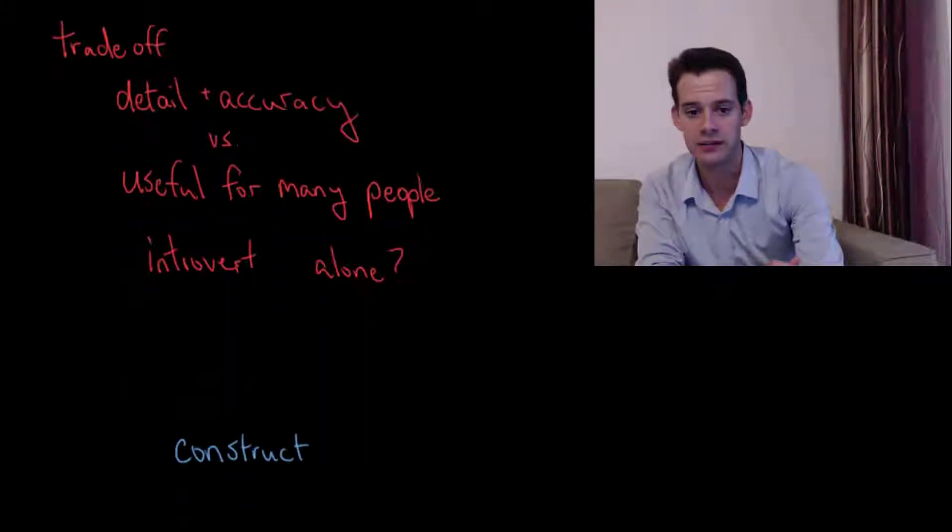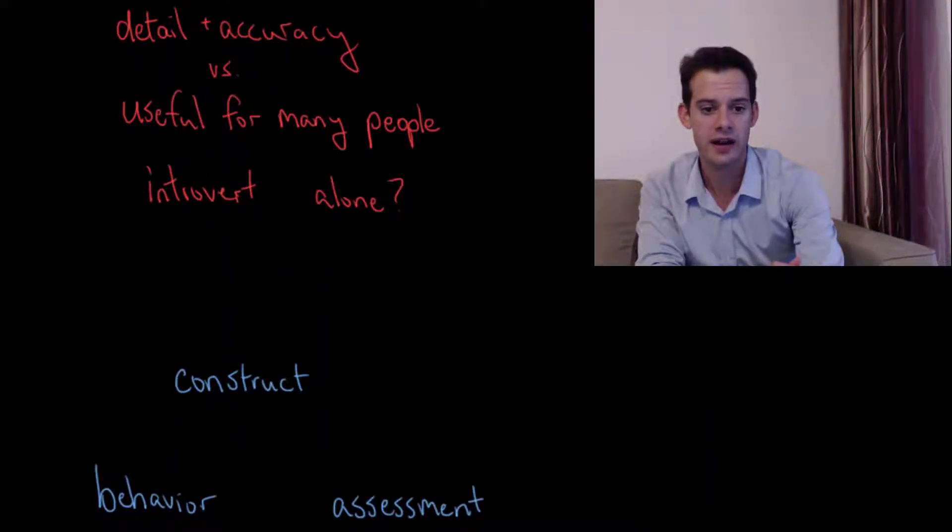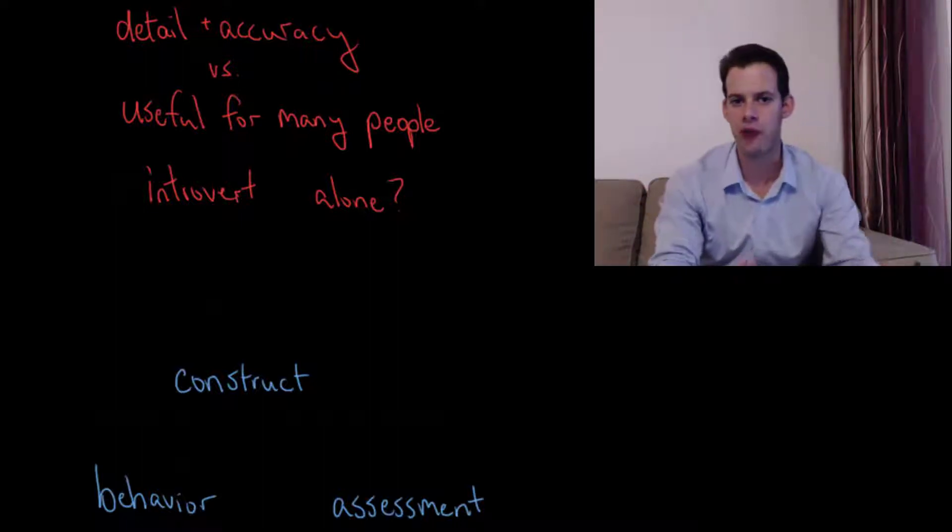So this brings us back to an idea that I mentioned in the unit on intelligence. And this is the idea that we have these three parts, we have this sort of triangle. And we have a construct.